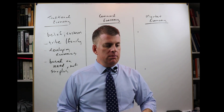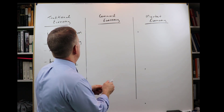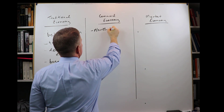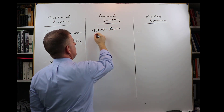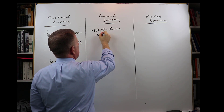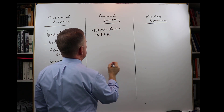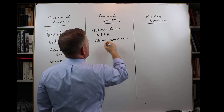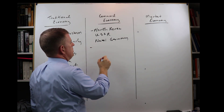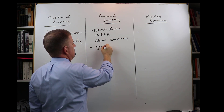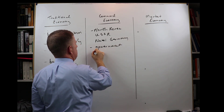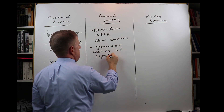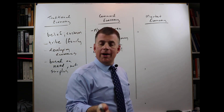The second one is command economy. North Korea would be the best example probably now. An old historical one could be the Soviet Union, Nazi Germany — examples there. It's where the government controls all aspects of the economy.